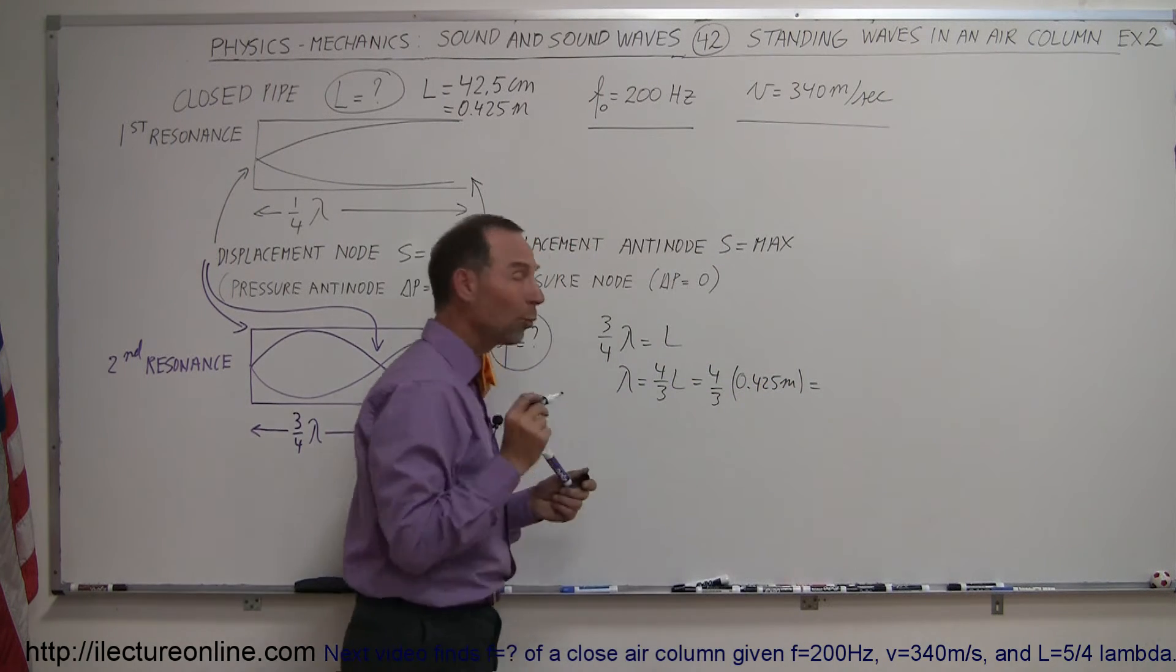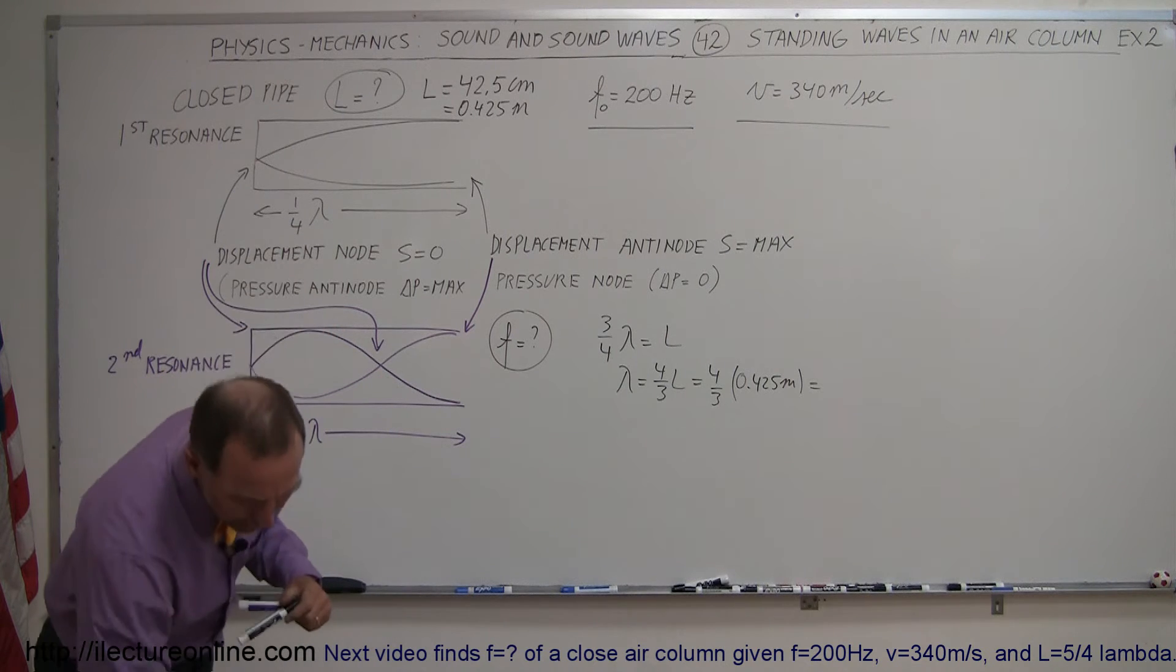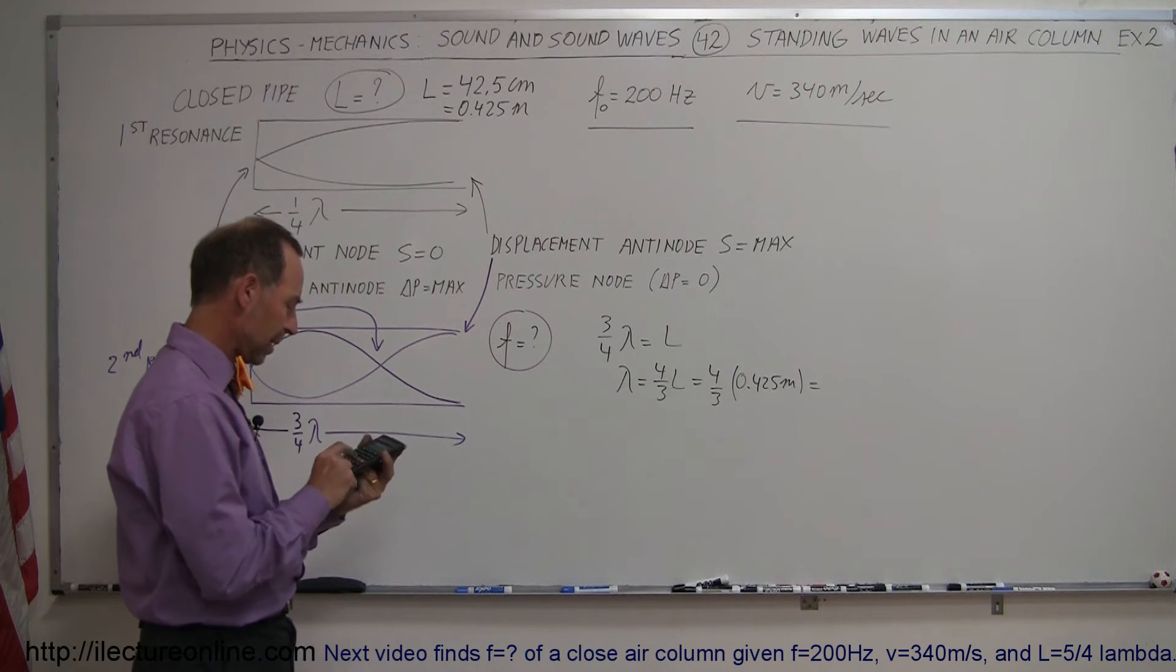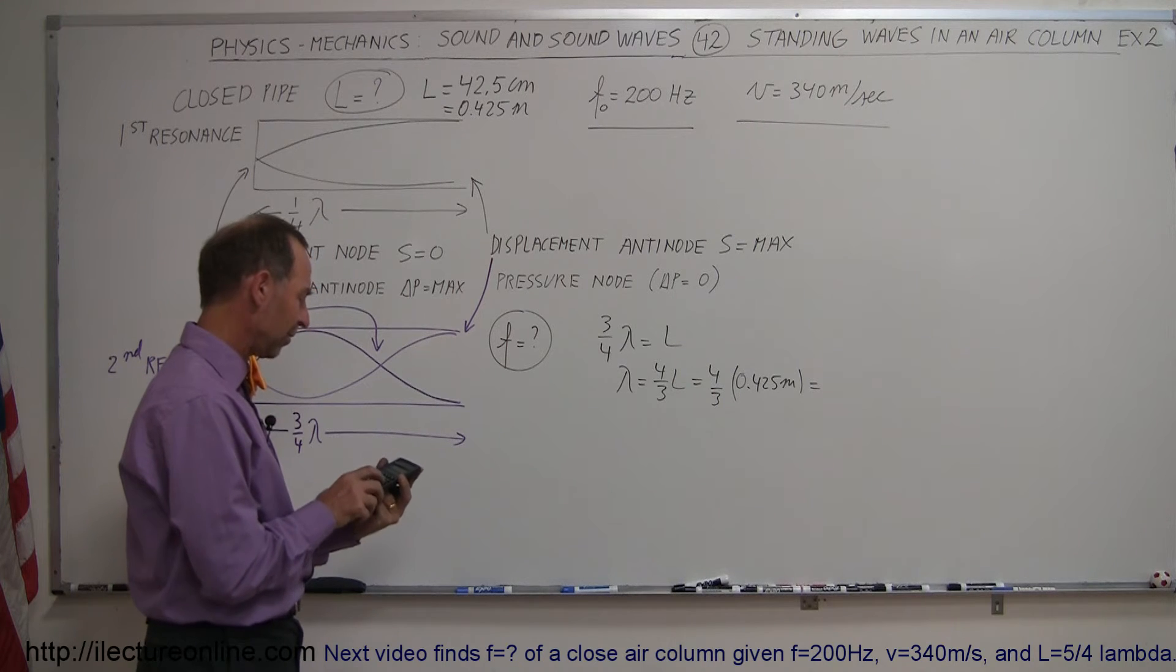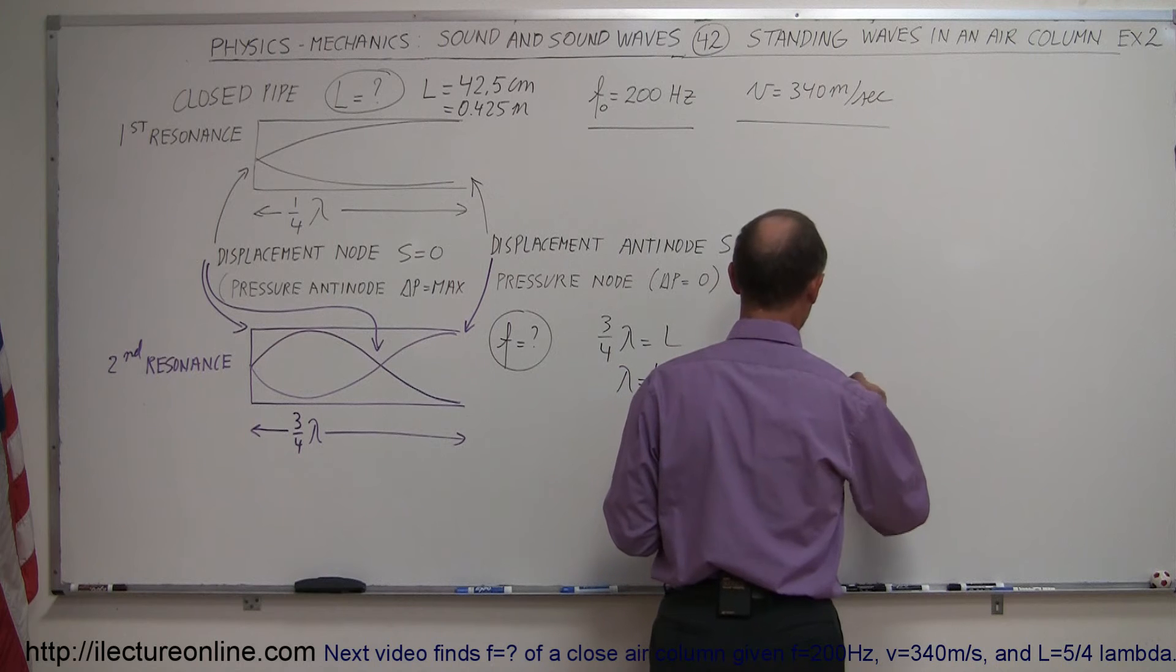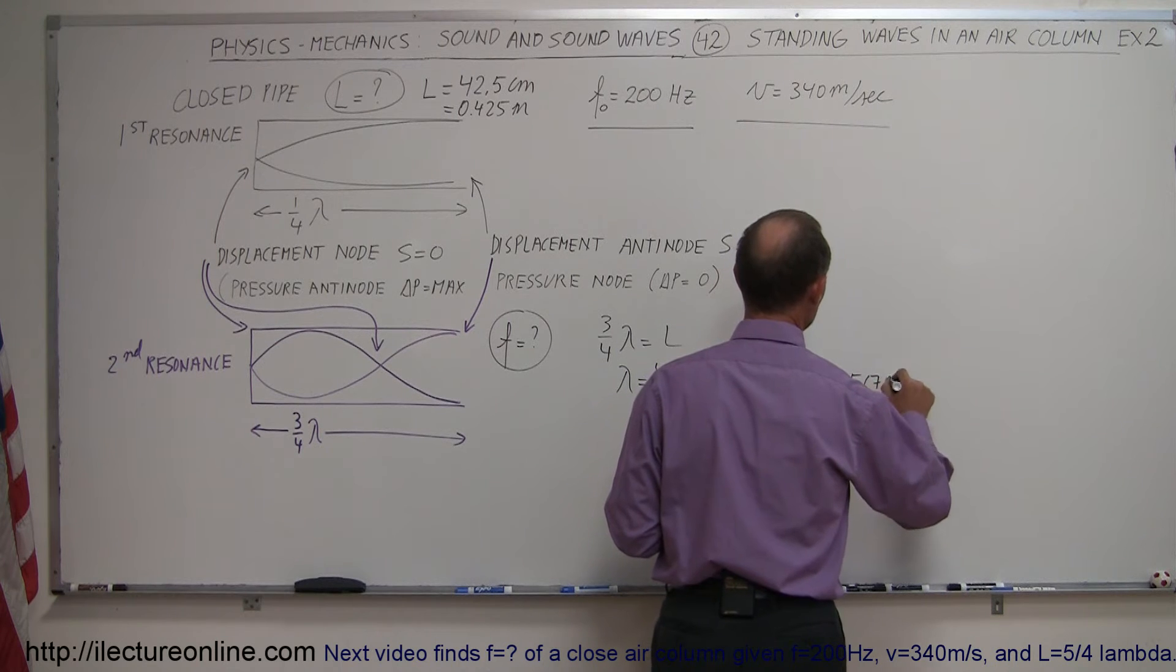That means that the wavelength will have to be equal to this. Let's try to find out. So times four divided by three and we get 0.567, 0.567 meters for the wavelength.